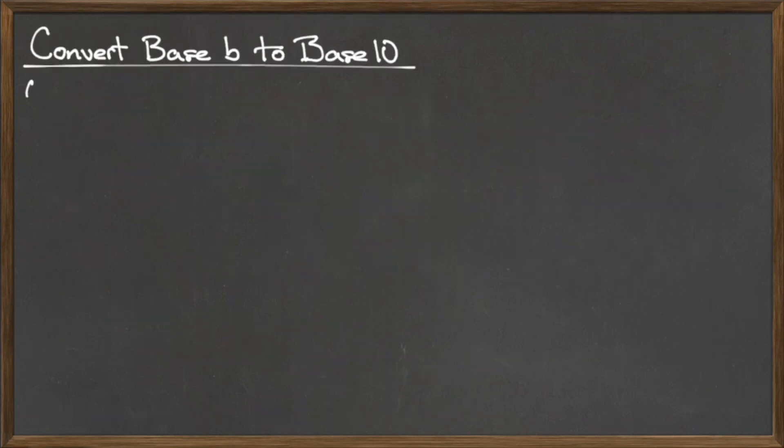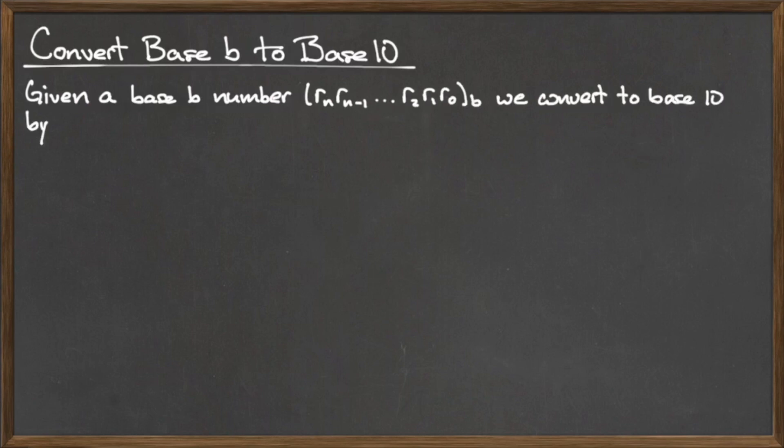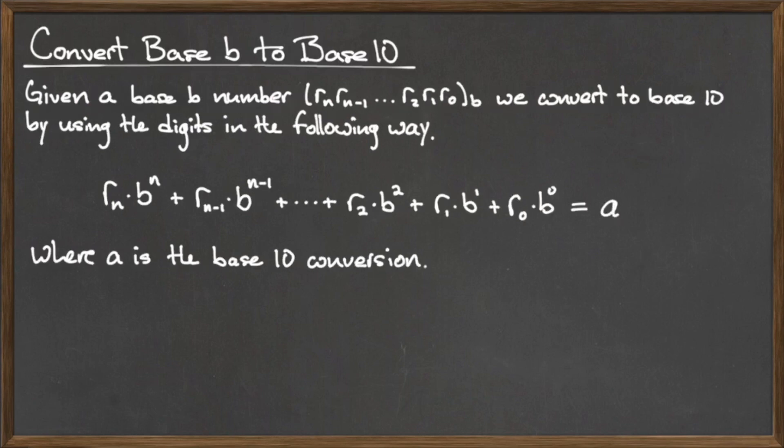If we are given a number written in base B and want to convert it to base 10, we can use a similar process as we used with the binary to base 10 conversion. We start by taking the rightmost digit of the base B number, r sub 0, and multiply this by B to the zeroth power. We then add the product of the digit to the left of r0, which is r1, and the base raised to the first power.